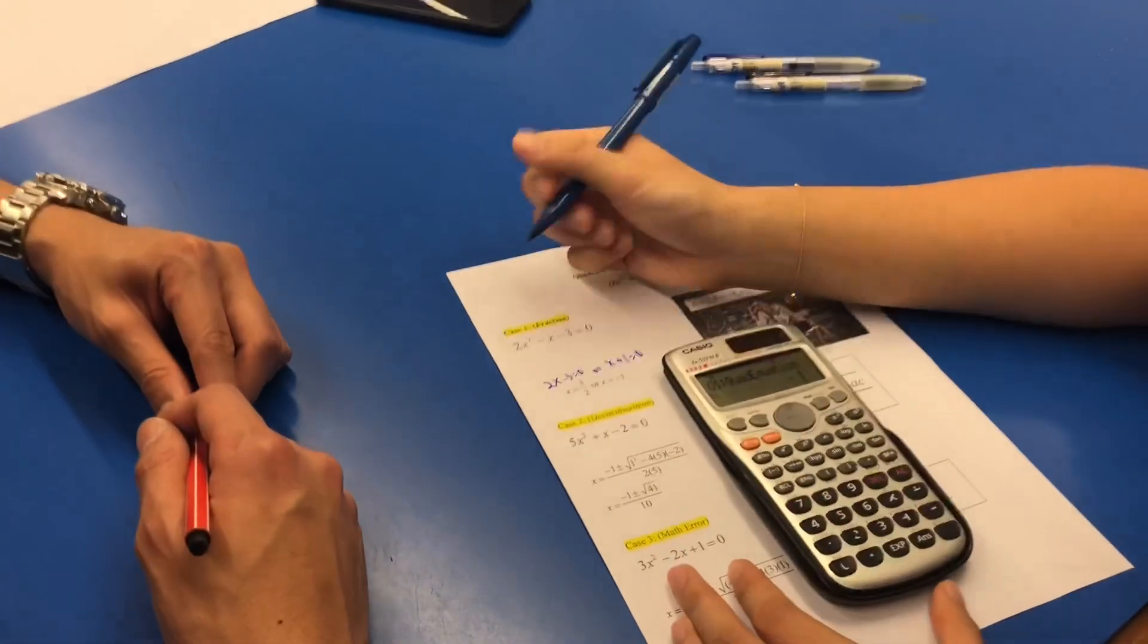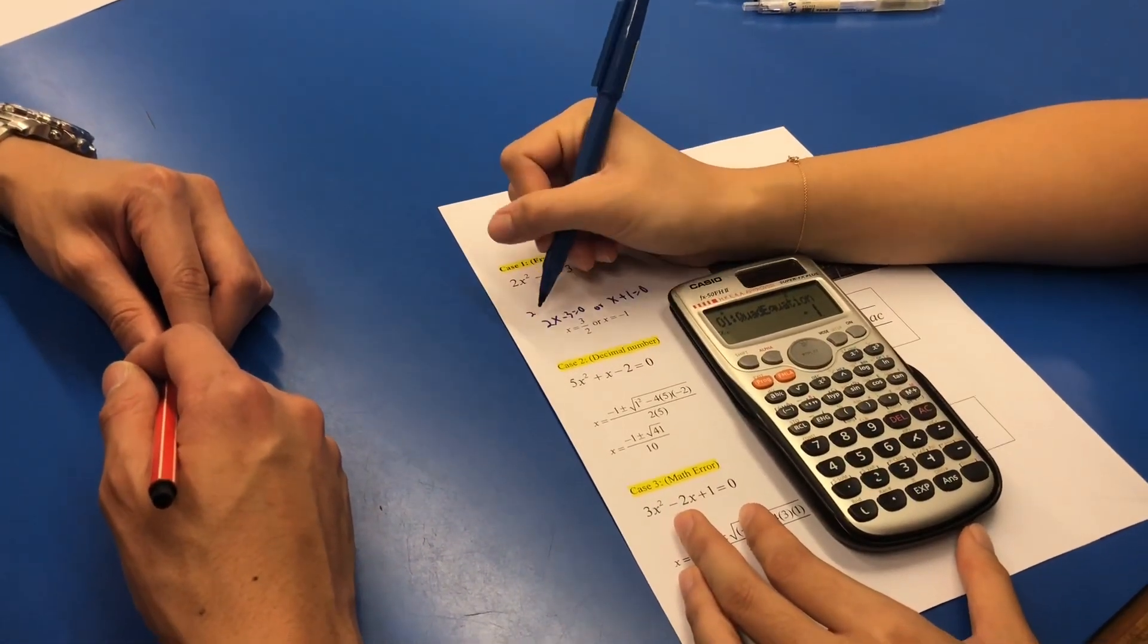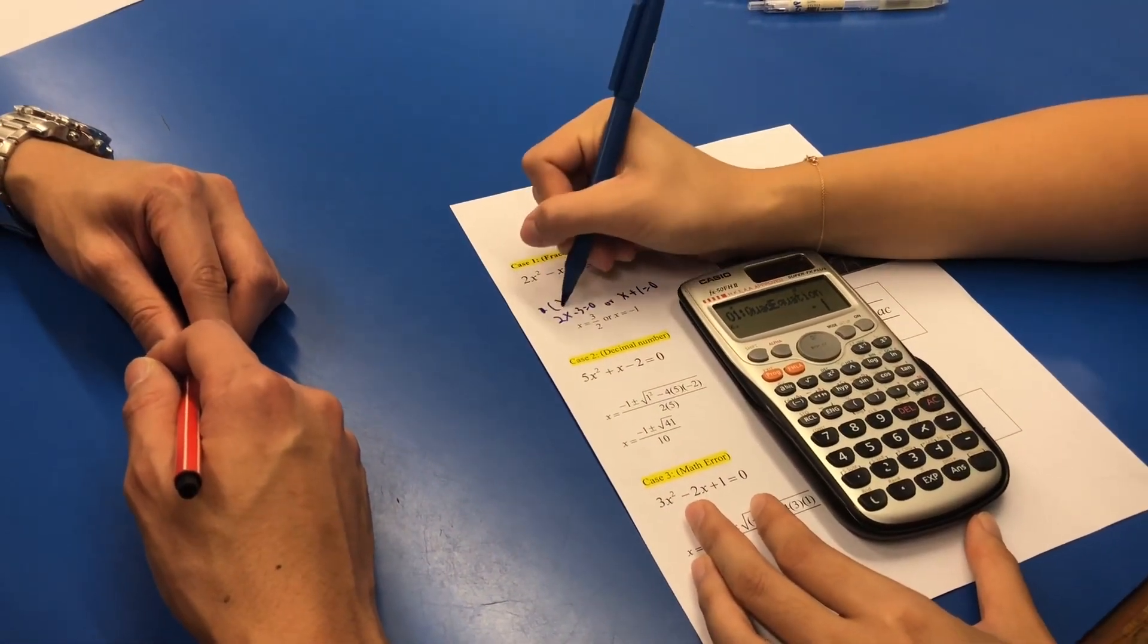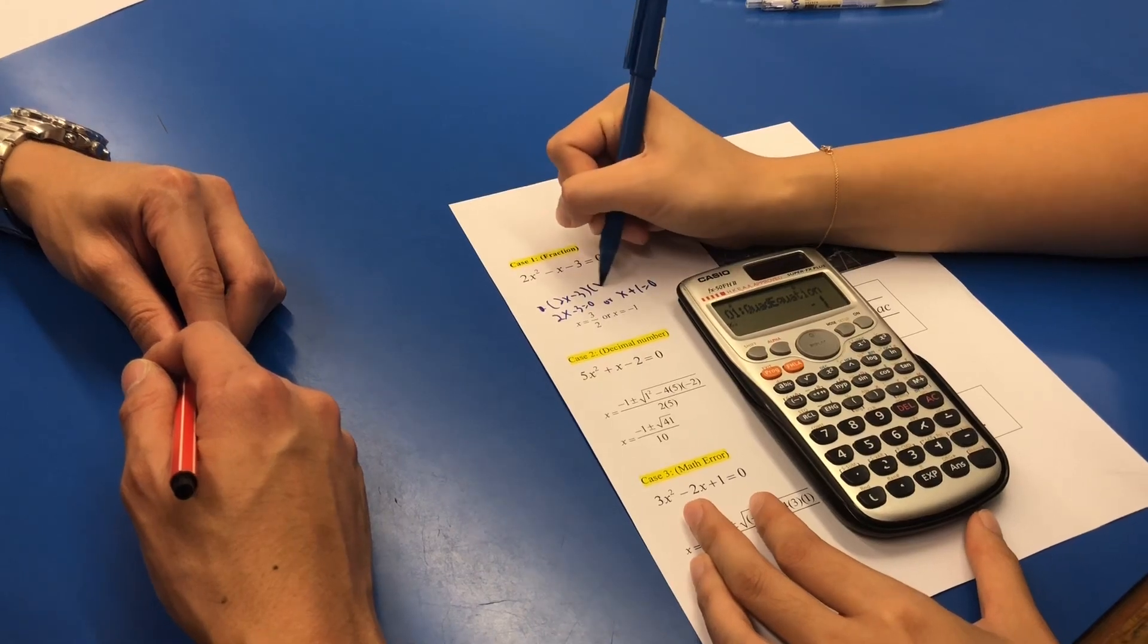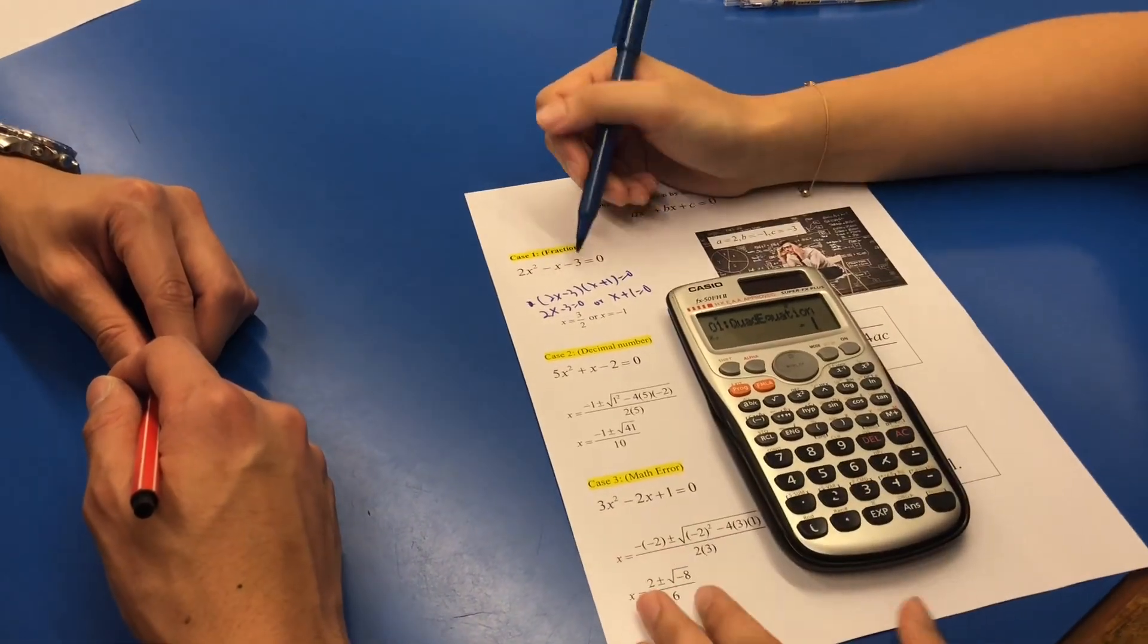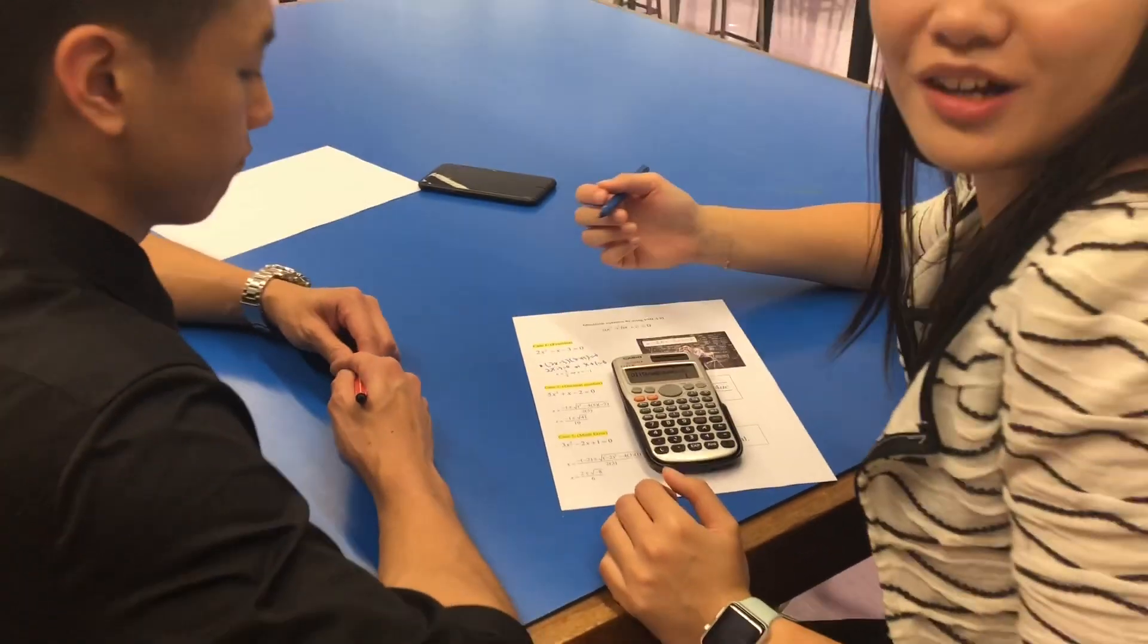Then x plus 1 equals 0. You can pretend you're doing the cross method to find the answer by just using formula 1.